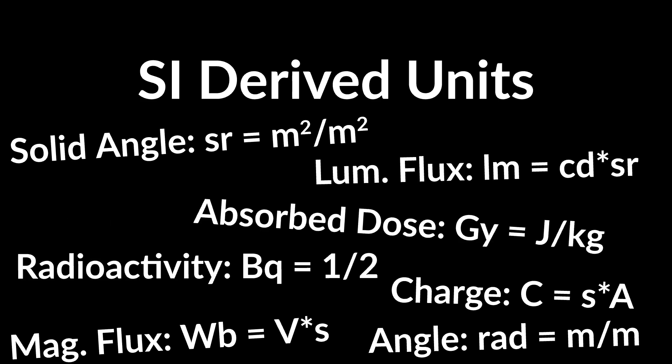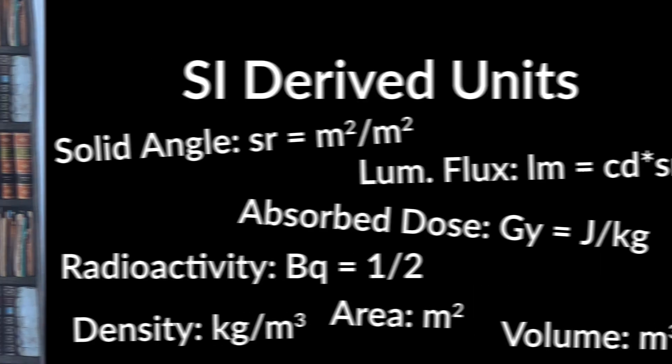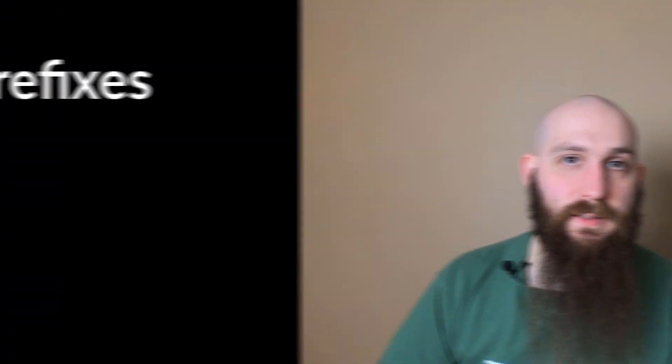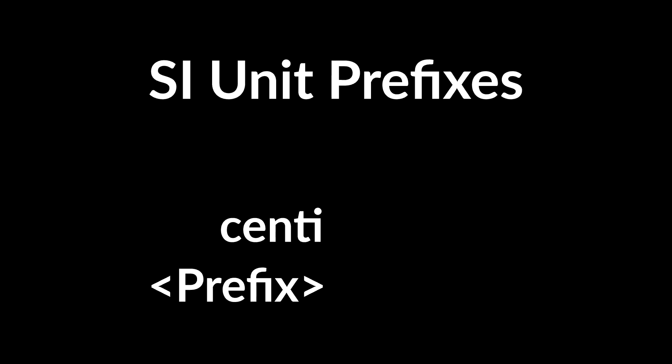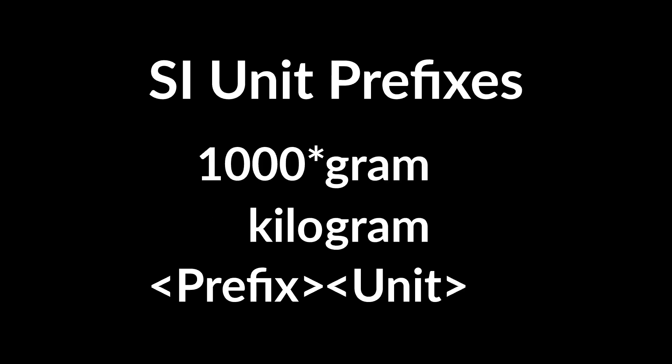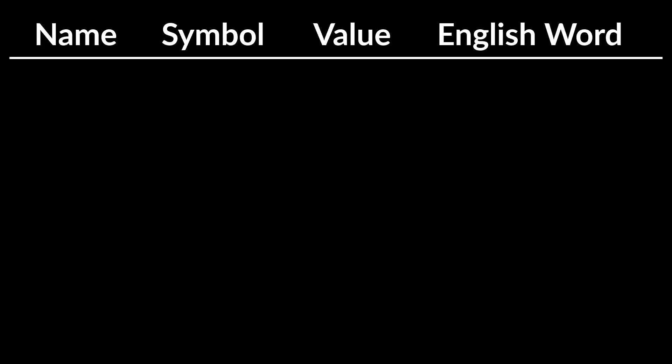Using those base units, all physical properties can be measured and units for them can be derived. But the SI standard offers an even more incredible concept — the main reason I believe it is so much superior to the old imperial units: scaling of units using prefixes. Prefixes mean something that comes before something else; in SI terms, a set of defined terms that, put in front of a unit, scales that unit.